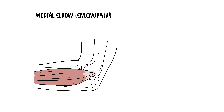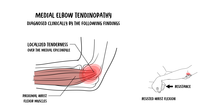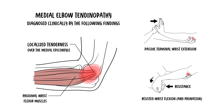Medial elbow tendinopathy is essentially irritation or tendinosis of the medial epicondyle where the tendons insert. It is diagnosed clinically by localized tenderness over the medial epicondyle and proximal wrist flexor muscle mass, pain with resisted wrist flexion and pronation with the elbow in full extension, and pain with passive wrist extension with the elbow in full extension.